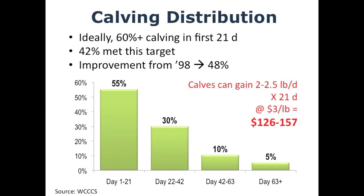The reason calving distribution matters economically: calves can gain somewhere between 2 to 2.5 pounds per day. If we're expecting calf prices in the range of $3 a pound this fall, an extra 21 days of earlier calving gets you about $130 to $160 per calf.